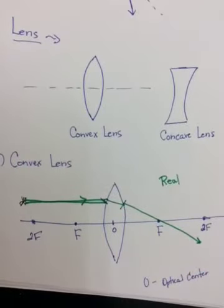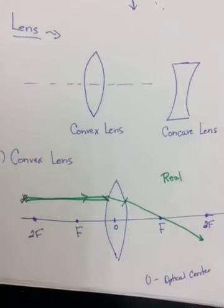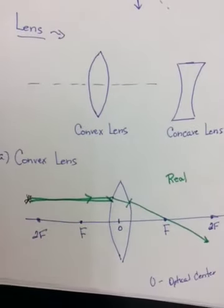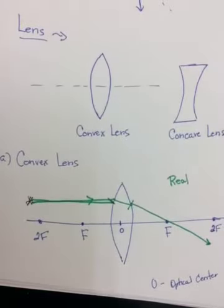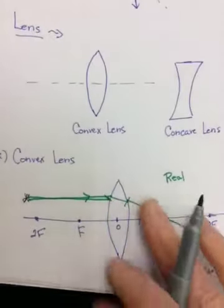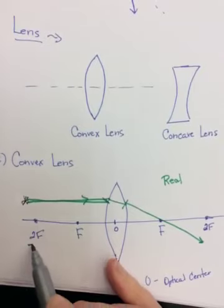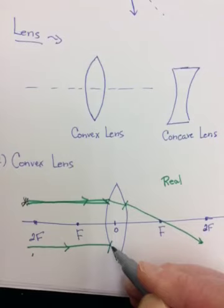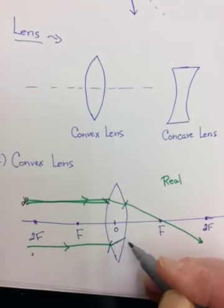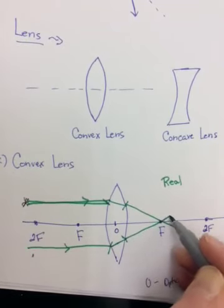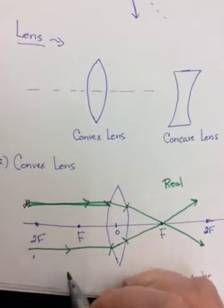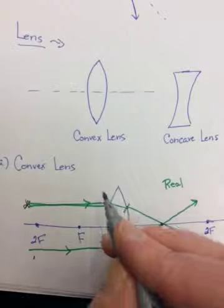If I send another light ray in parallel to the principal axis down here, going from less to more, it's going to bend towards, which means it's going to bend up. Going from more to less, it's going to bend away, which means it's also going to bend up. And look where they cross. If I did that with a whole bunch of parallel light rays, they would all cross at F.